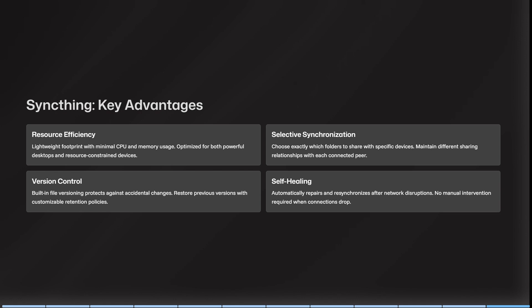It maintains different sharing relationships with each connected peer, which is a great way to manage your synchronization. It has built-in file versioning, which protects against accidental changes — you can restore previous versions with customizable retention policies. It will also automatically repair and synchronize after any network disruption, with no manual intervention required when connections drop.